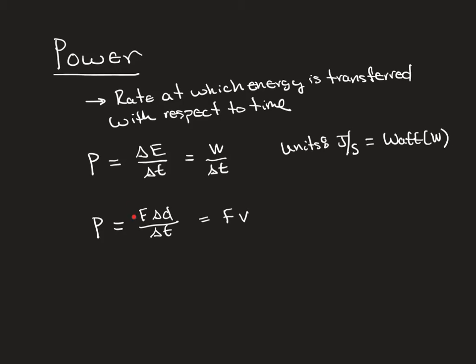So we also have to remember work is equal to force times displacement. So for work, I can plug in force times displacement. And displacement divided by time, we learned way back in topic two, is the same thing as velocity. Now keep in mind, if you plug in an average velocity, you're going to get an average power. If you plug in an instantaneous velocity, you're going to end up with an instantaneous power.